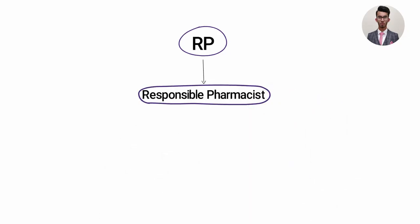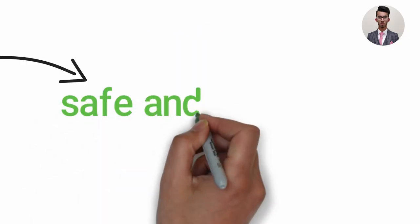After the pre-reg pharmacists, then you have the RP, which basically stands for responsible pharmacist. This is the pharmacist on duty who is responsible for safe and effective running of the pharmacy.